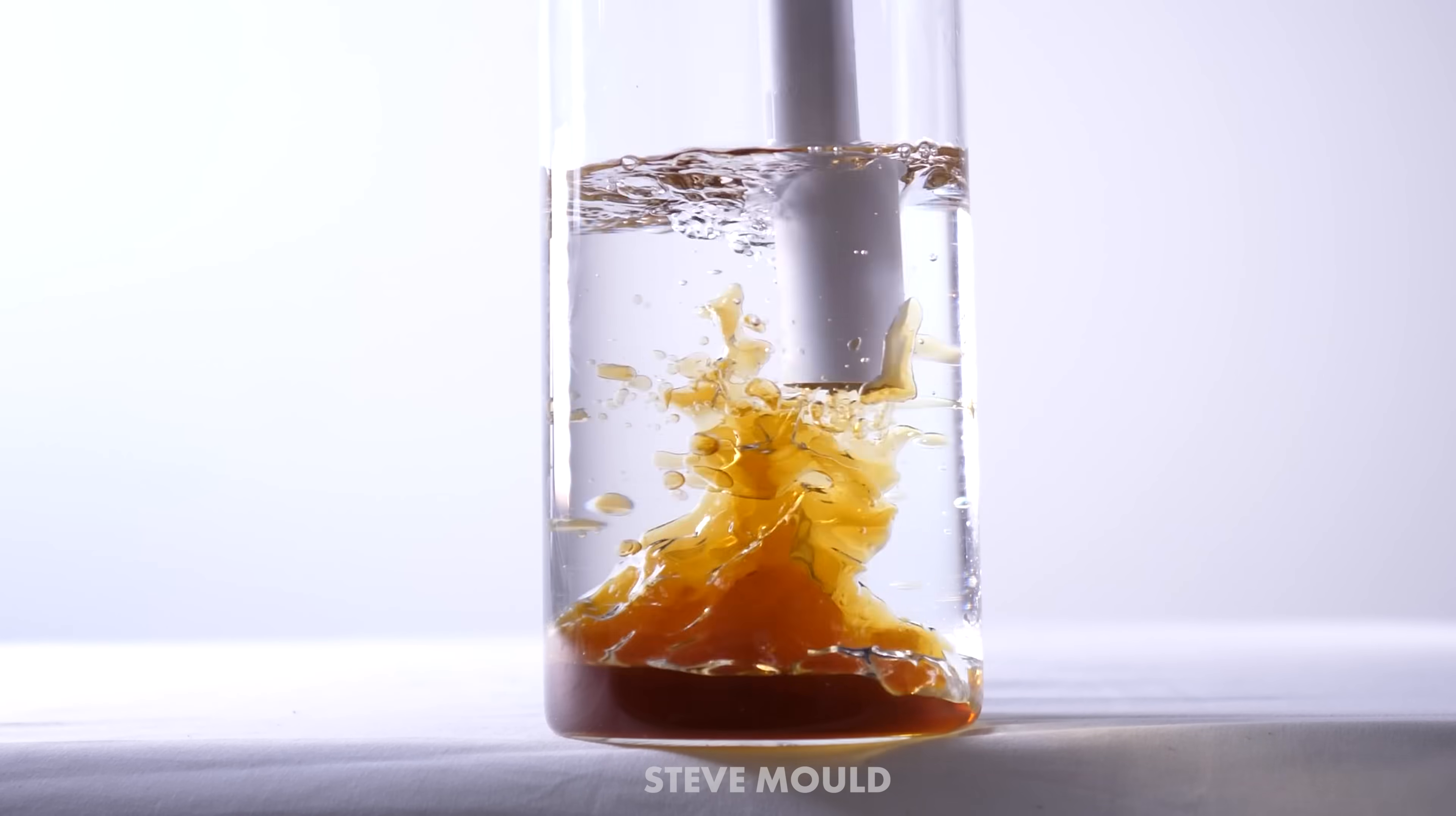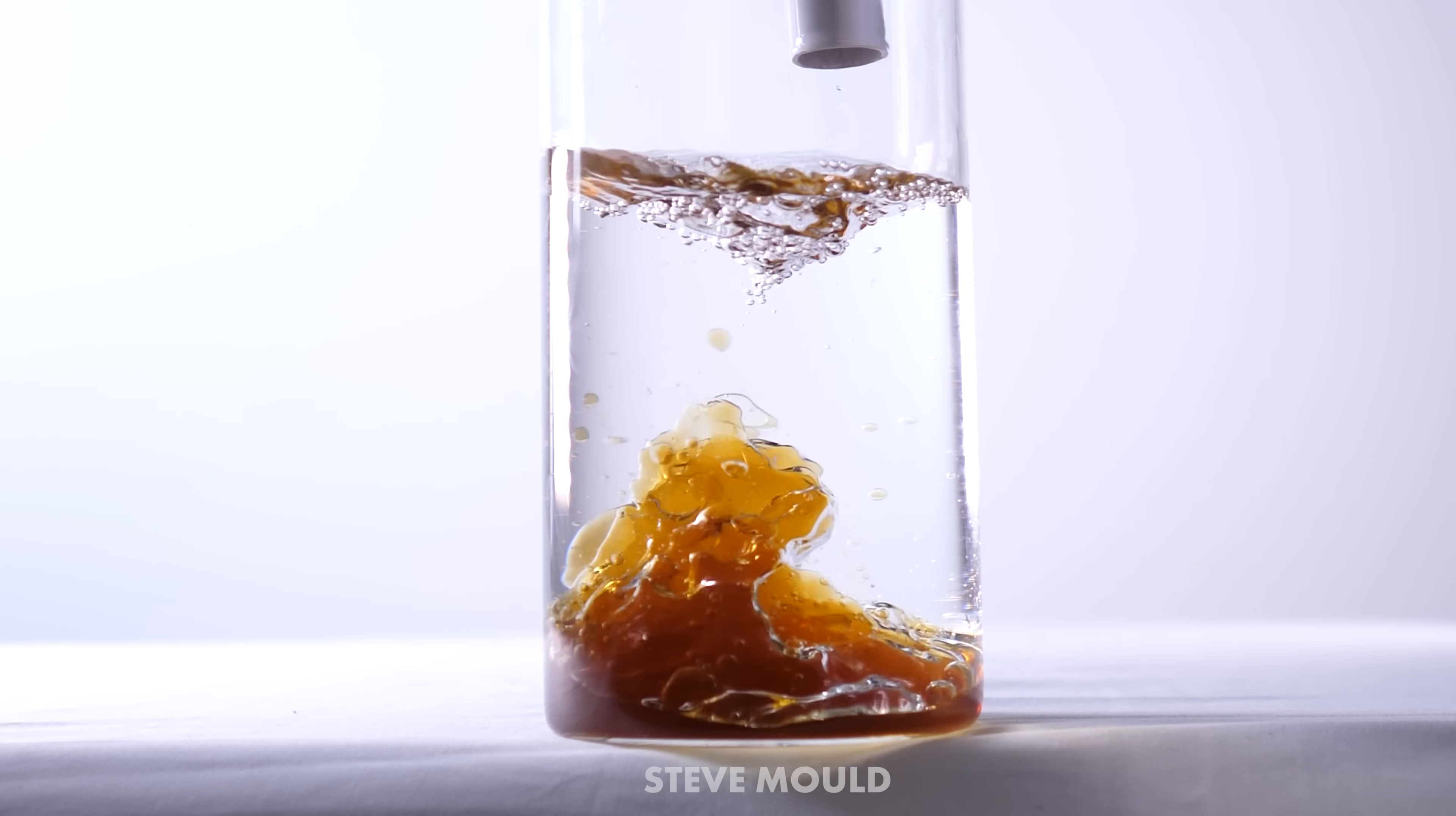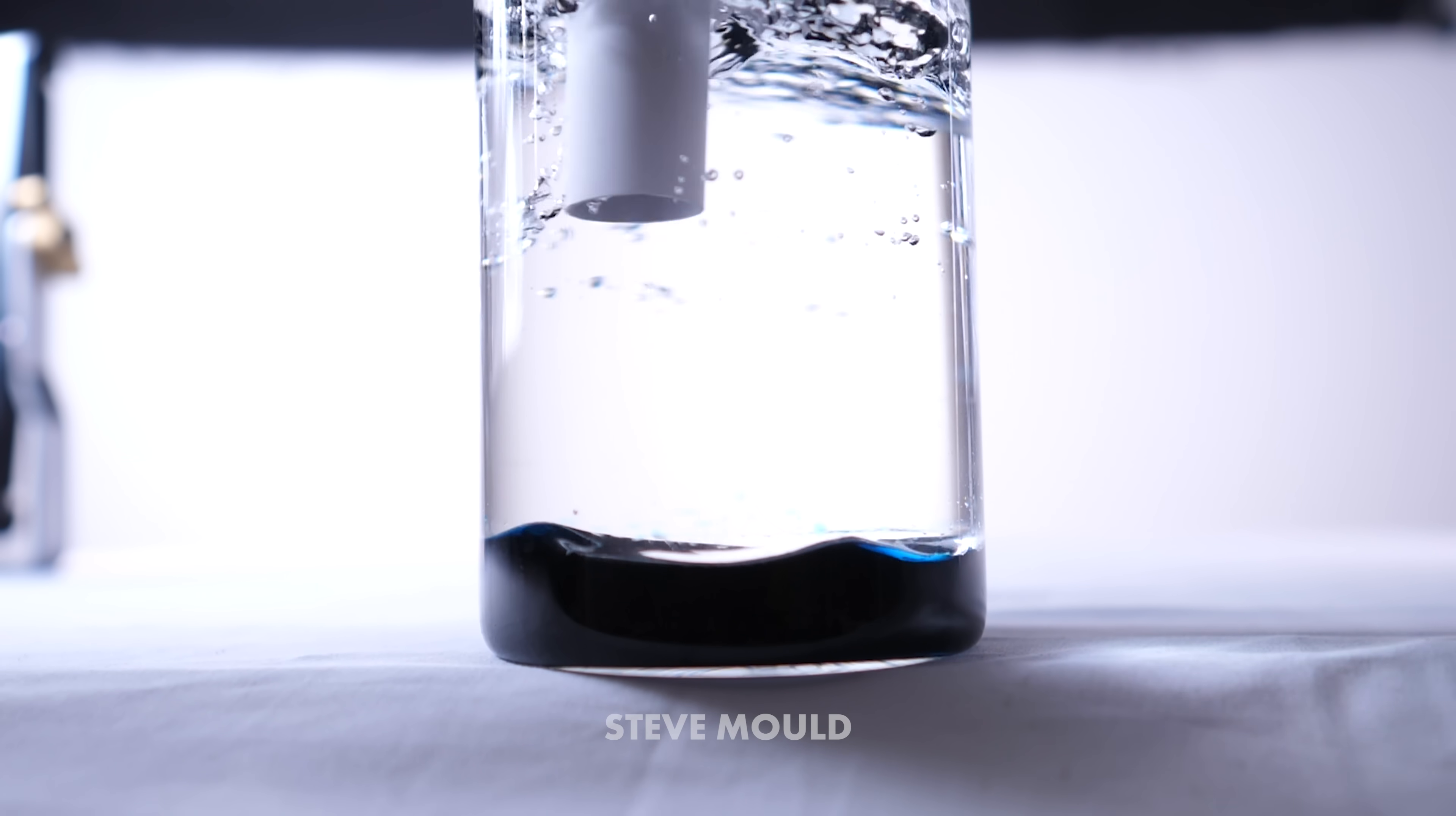In other words, what you end up with is a flow of liquid towards the center at the bottom of the container. This has been characterized as secondary flow. You've got the primary flow, which is the vortex motion of the bulk of the fluid, and you've got this secondary flow at the boundary layer of liquid moving towards the center. And it's this inward flow of fluid that causes the more dense liquid to bunch up in the middle, or indeed the tea leaves.